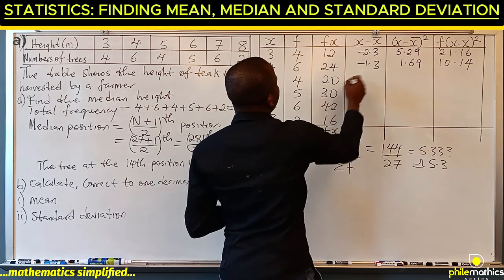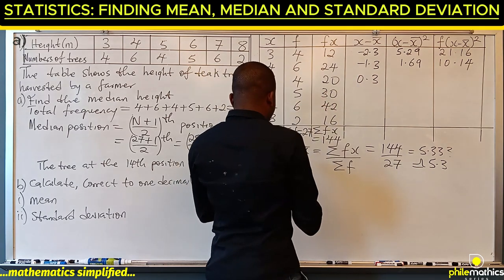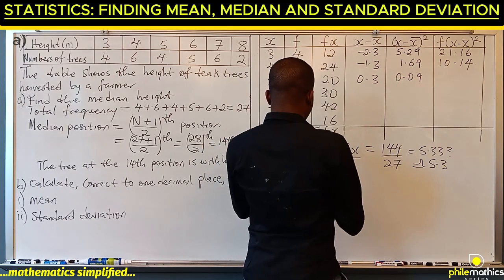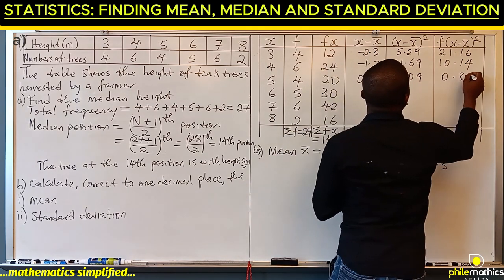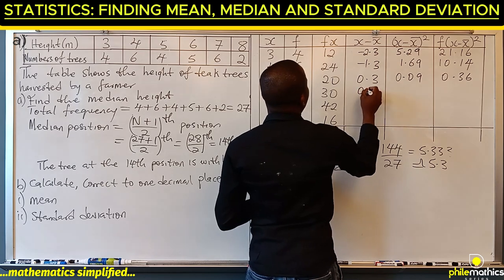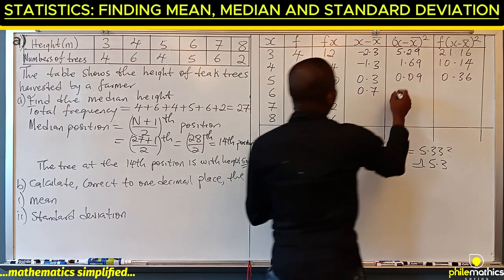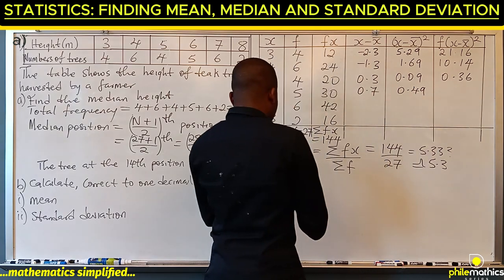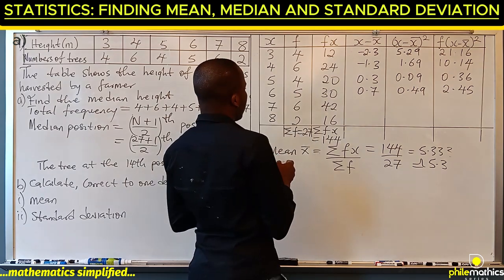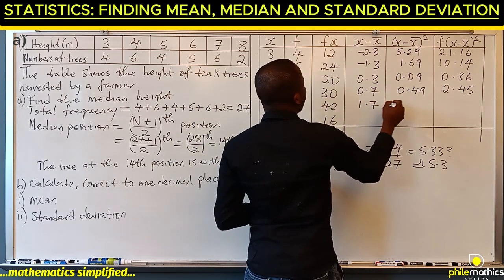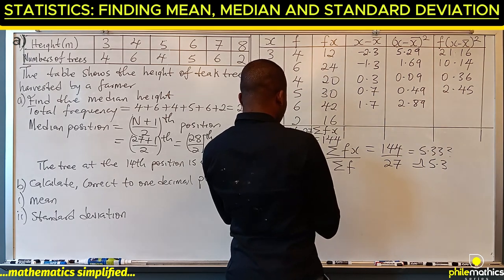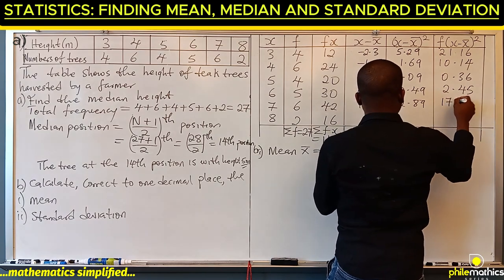Five minus 5.3 is minus 0.3; squaring gives 0.09, times frequency 4 gives 0.36. Six minus 5.3 is 0.7; squaring gives 0.49, times frequency 5 gives 2.45. Seven minus 5.3 is 1.7; squaring gives 2.89, times frequency 6 gives 17.34.